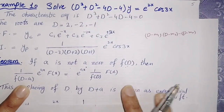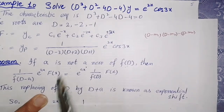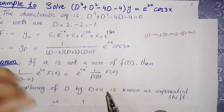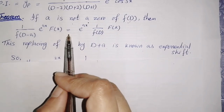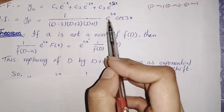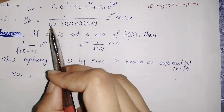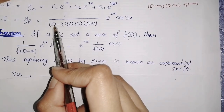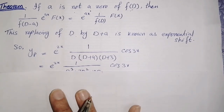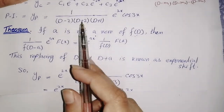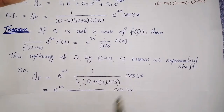In this question, a = 2. Is 2 a zero of f(D)? No, 2 is not a zero of this function. So we apply the exponential shift: write e^(2x) first, then replace D with D + 2 everywhere. So D becomes D + 2, then D + 2 − 2 = D; D + 2 + 2 = D + 4; and D + 2 + 1 = D + 3. cos 3x remains.